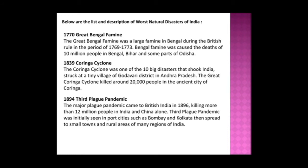Here are some of the worst natural disasters in India. The Great Bengal Famine (1769–1773) caused the death of 10 million people in Bengal, Bihar, and parts of Odisha. The Coringa Cyclone of 1839 struck the village of Coringa in Godavari district, Andhra Pradesh, killing around 20,000 people. The Third Plague Pandemic came to British India in 1896, killing more than 12 million people in India and China alone, initially appearing in port cities such as Bombay and Kolkata.